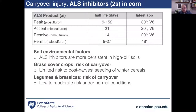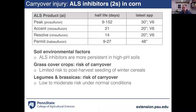For group 2 or ALS inhibitors in corn programs — we're using a lot of Peak for burr cucumber control in Pennsylvania, plus Accent, Resolve, and Permit for particular weed species problems. A few notes: pH makes a difference with this mode of action — we see greater persistence in high pH soils, greater than 7. There's pretty limited risk for post-harvest seeding winter cereals with these products, and some risk of carryover injury to legumes or brassicas.